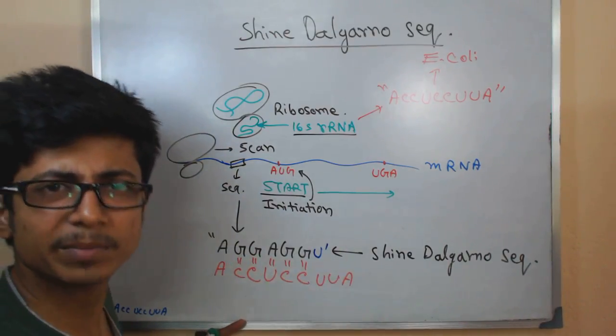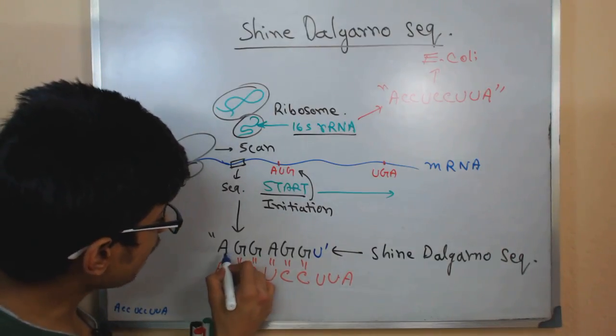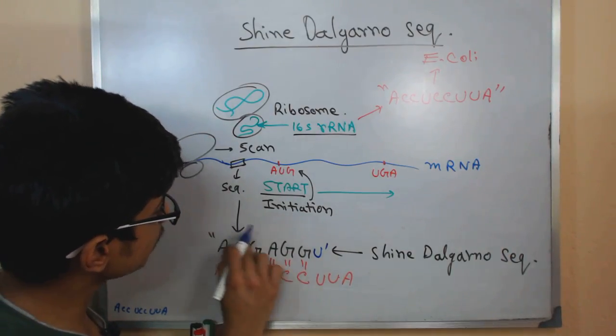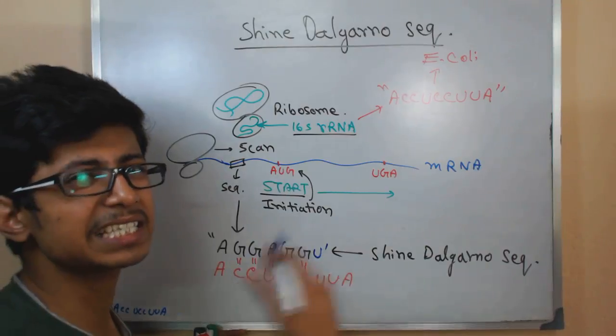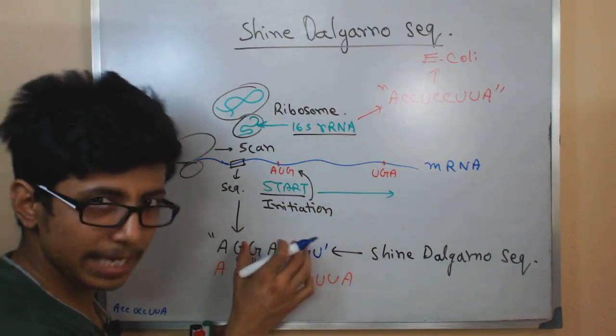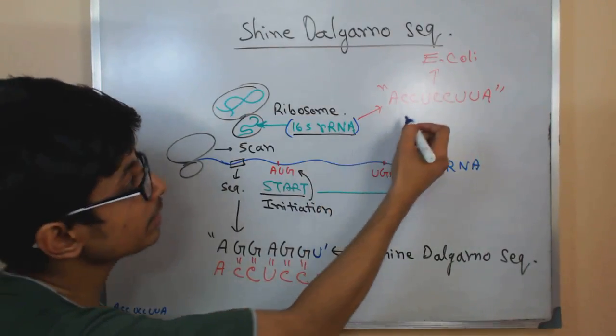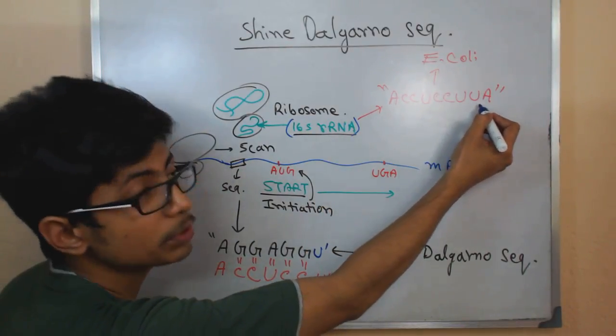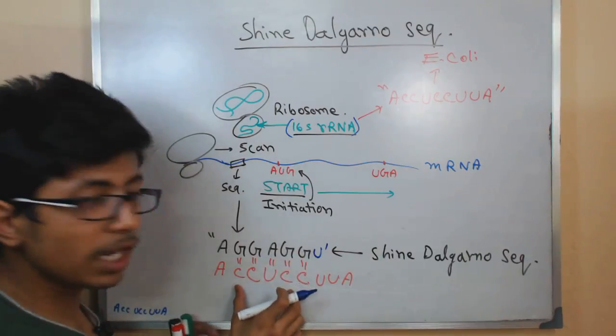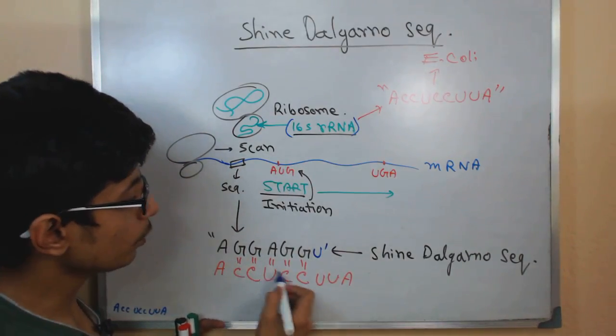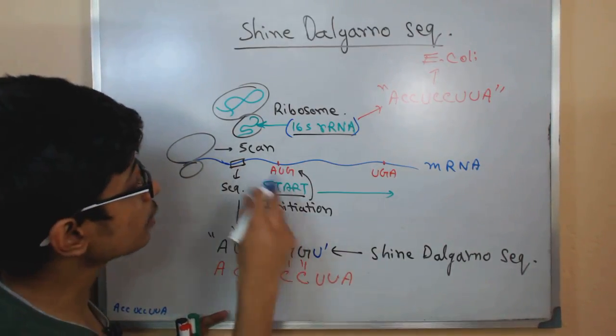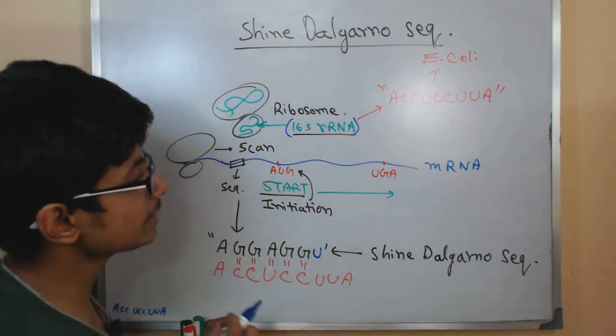In some other organism it might be something else. But it should have this consensus of conserved sequence nature that is AGGAGG, this repeat. Once it have that, ribosome with help of 16S rRNA complementary nature of ACCUCCUUA, it can stall by pairing with the Shine-Dalgarno sequence of mRNA. Imagine the situation now.